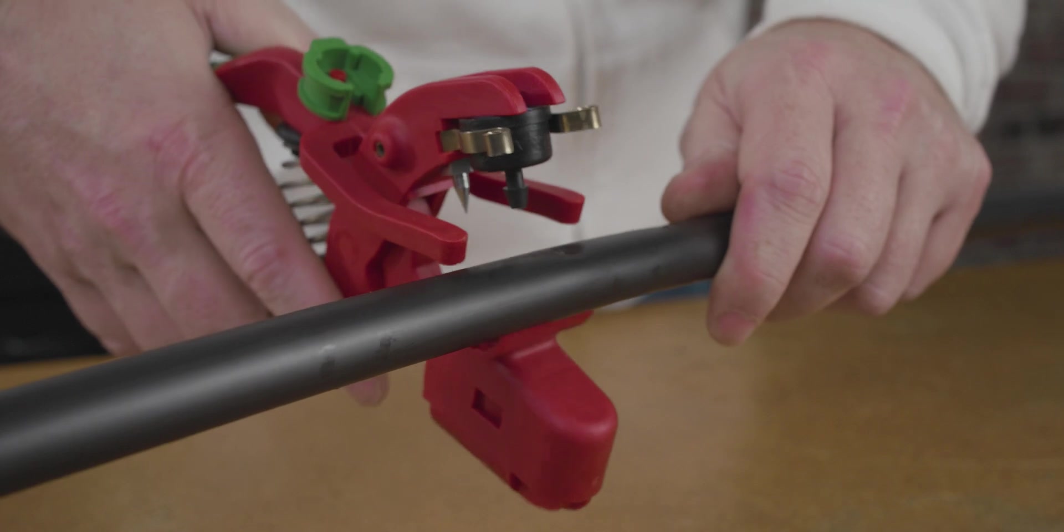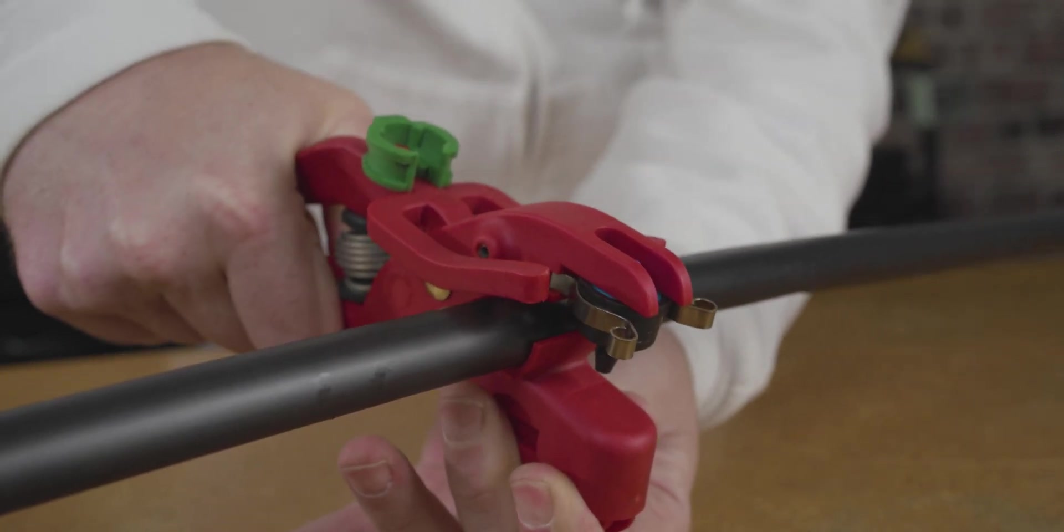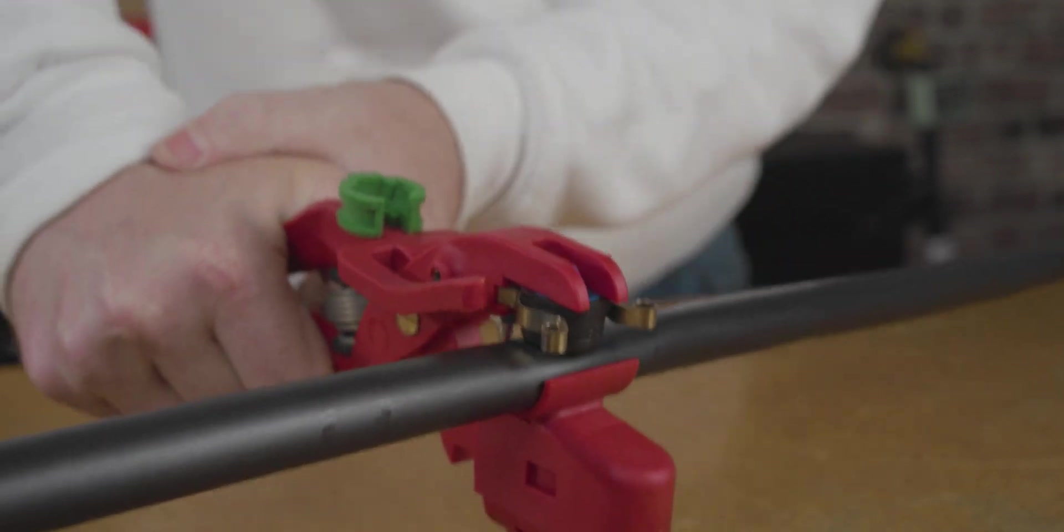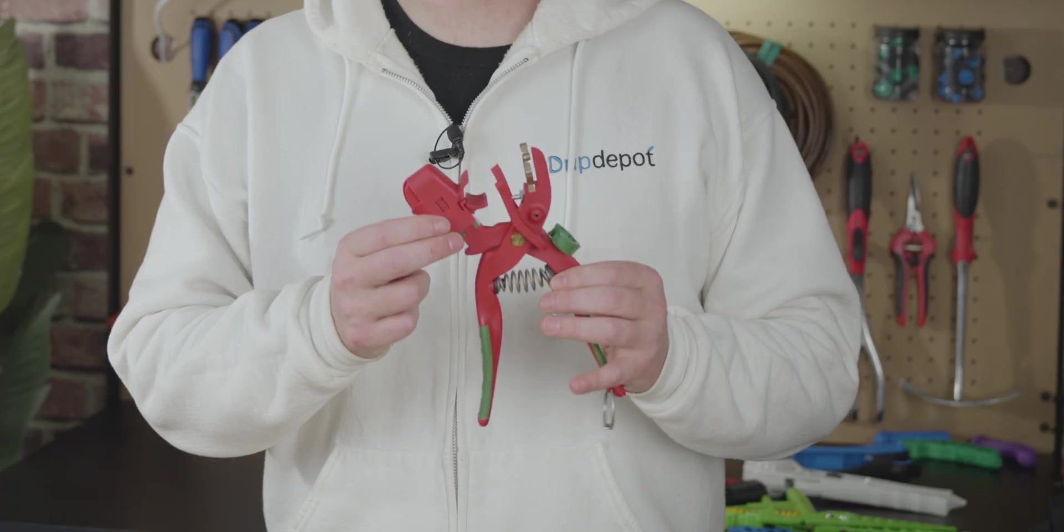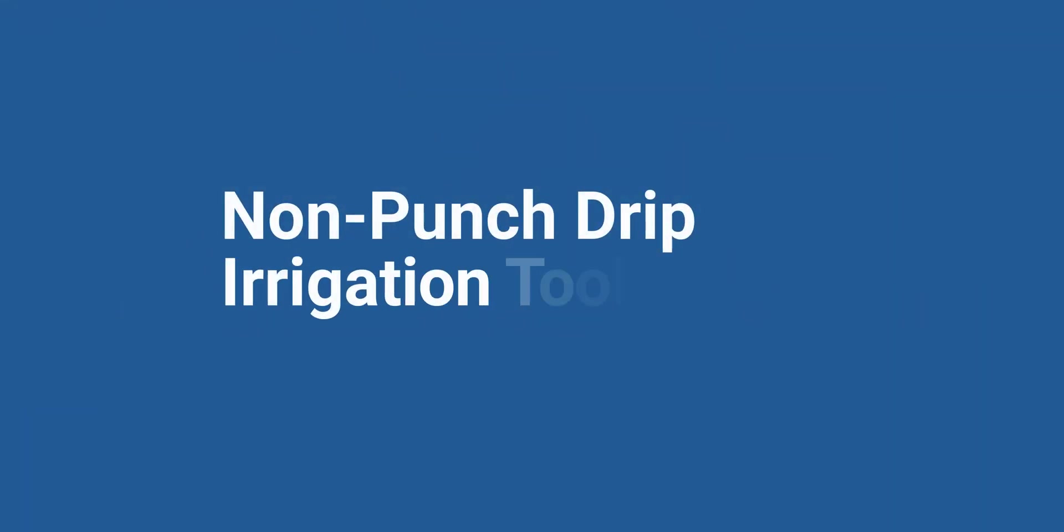Now, there is one very useful multi-function tool that we've left out because it's an advanced tool. If you're installing drip irrigation commercially, you may be interested in this one. Click the link in the top right to learn more about the DripClip punch installation tool. Now we've got a couple tools with no punching capability, but they work in tandem with punches to make installing a drip system much easier.